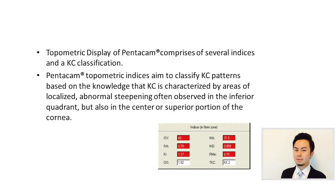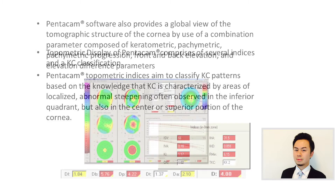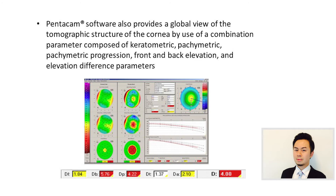The Pentacam has a topometric display which comprises several indexes and a keratoconus classification. The Pentacam also has a very powerful tool in diagnosing keratoconus or corneal ectasia, which is the BAD — the Belin and Ambrosio Display — which is shown here.